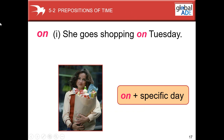Okay, now preposition 'on'. She goes shopping on Tuesday. So we use 'on' plus a specific day. How many days a week, everybody? We have seven days. On Monday, Tuesday, Wednesday, Thursday, Friday, Saturday, and Sunday — that's a specific day.